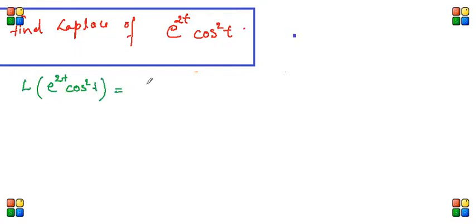This is equal to L of e raised to 2t cos square t, which is nothing but 1 plus cos 2t by 2.